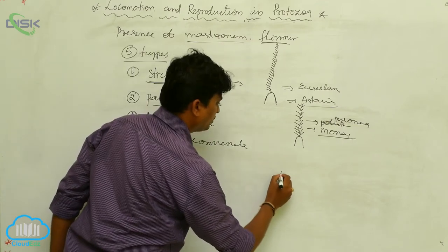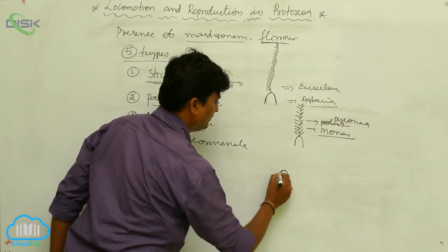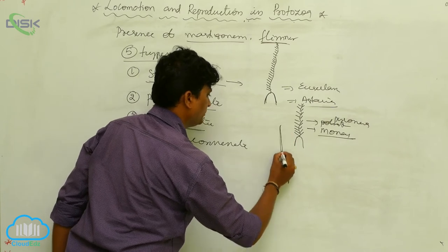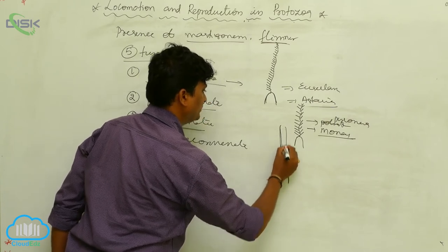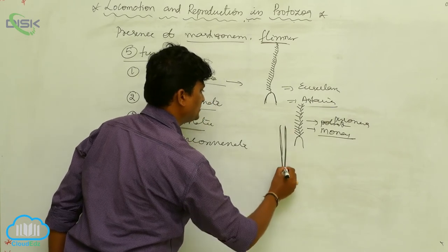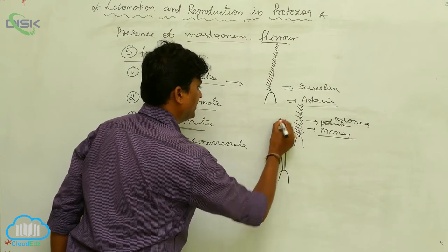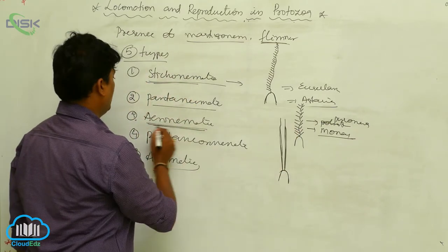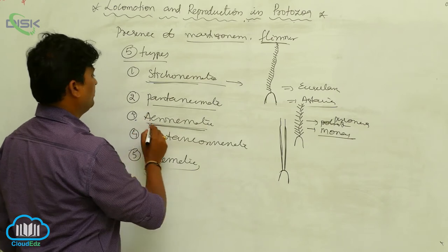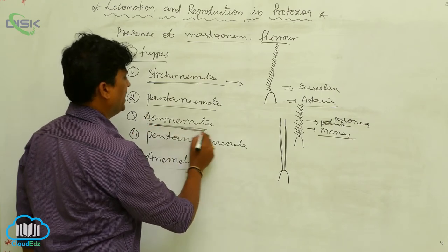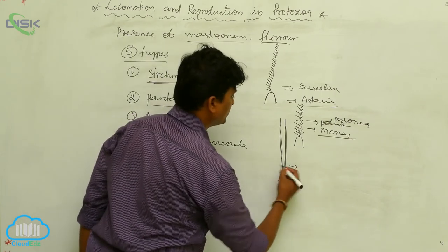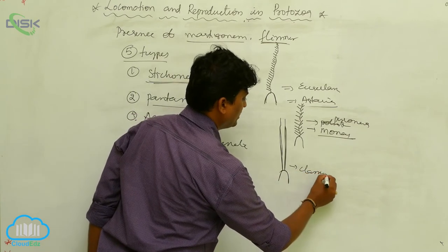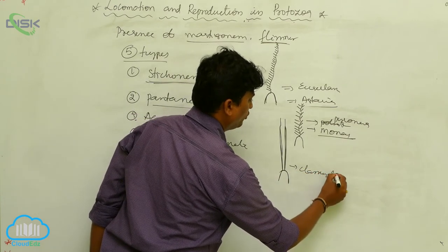Acronymatic: like the blepharoplast shown, there are no flimmers and mastogonyms present, and the axial filament is negated. This type is acronymatic. The best example is Chlamydomonas.